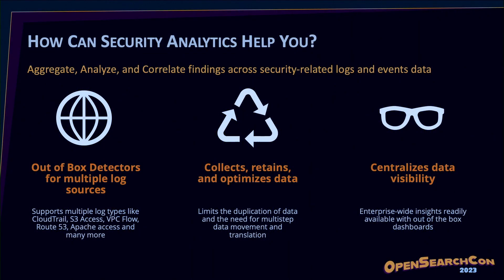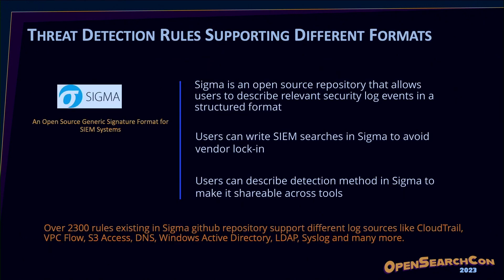Having looked at the challenges, let's look at how we can actually aggregate, analyze, and correlate security findings together in a single system. We need to collect logs from different components centrally, run detectors at a fixed frequency to generate security findings. These detectors run on security rules — we leverage Sigma, an open source repository with around 2,300 security rules for different log types such as CloudTrail, VPC Flow, and S3 access logs. Being open source, it avoids vendor lock-in and users can add their own rules.